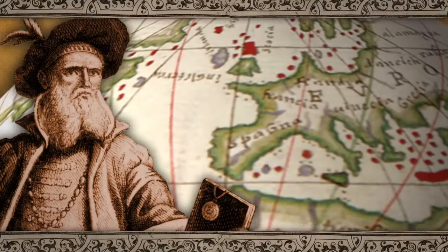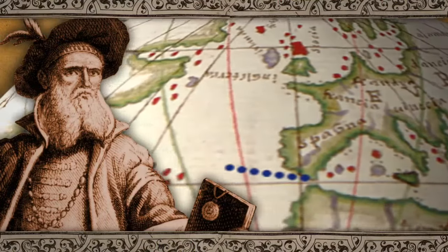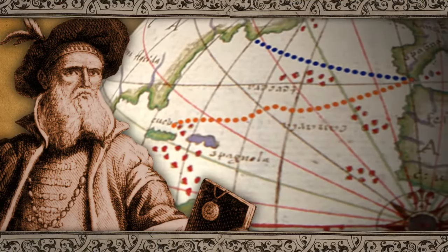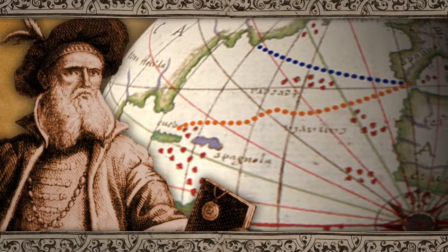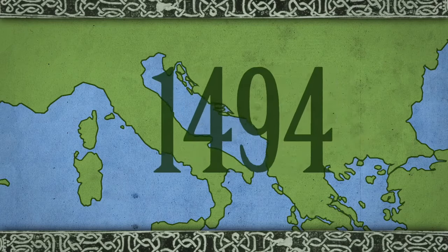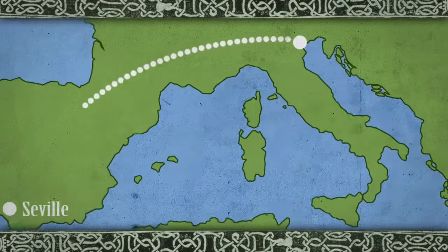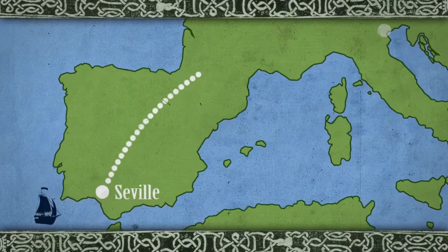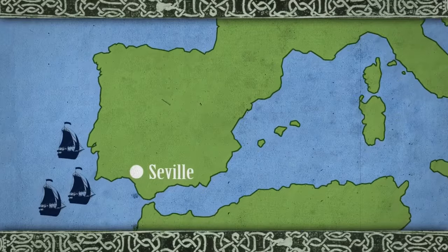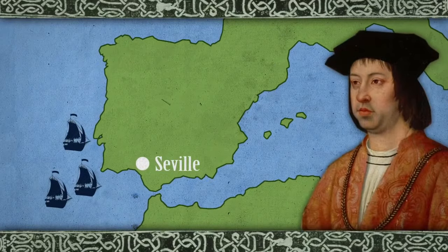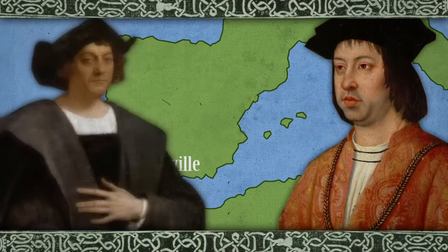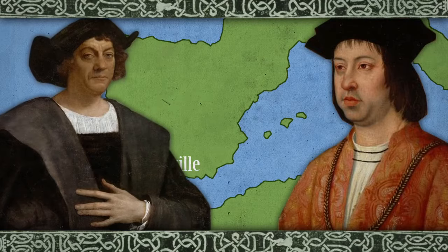However, Cabotto thought that by taking a more northerly route, his trip would be shorter than the southerly one Columbus had chosen. In 1494, Cabotto moved to Seville and offered to sail a transatlantic expedition for King Ferdinand of Spain. But Ferdinand gave all of Spain's expeditions to rival explorer Christopher Columbus.